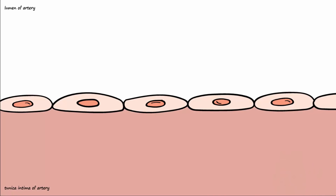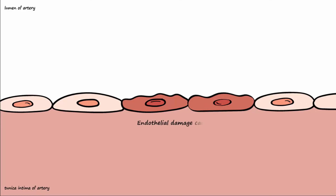The progression of atherosclerosis begins when the endothelial cells of the arterial wall become damaged. This can be caused by hypertension, smoking, hyperglycemia, and hypercholesterolemia, which is an increased number of LDLs in the blood.